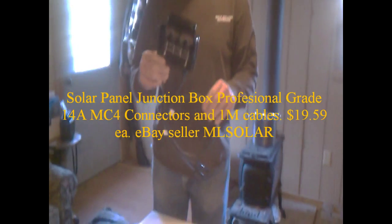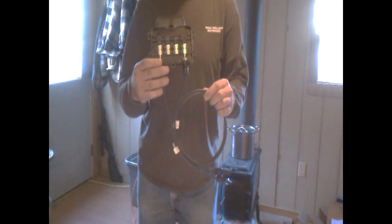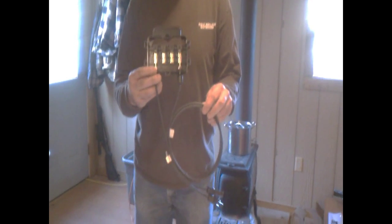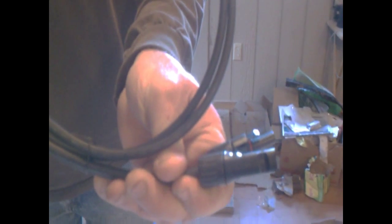This is our junction box that we purchased separately from the panel. We didn't get them together. We actually bought the junction boxes from eBay and this is what we insert the wires into and then we will use the wires here to connect to the other panels and into our system.